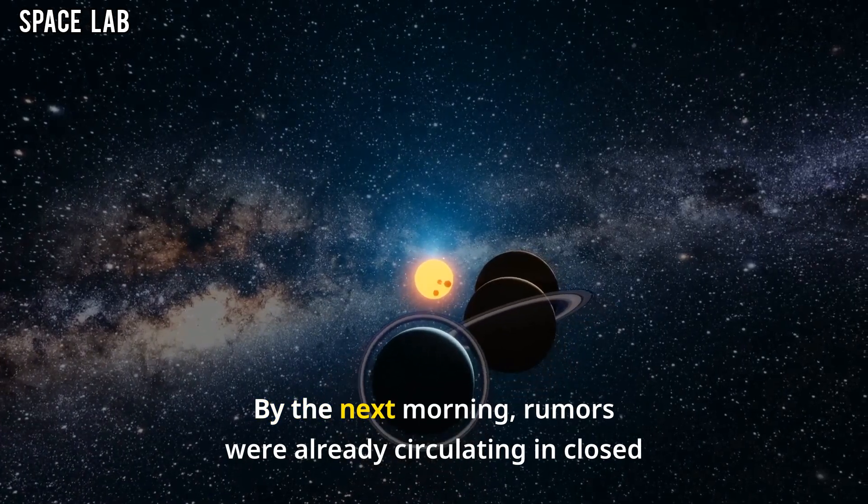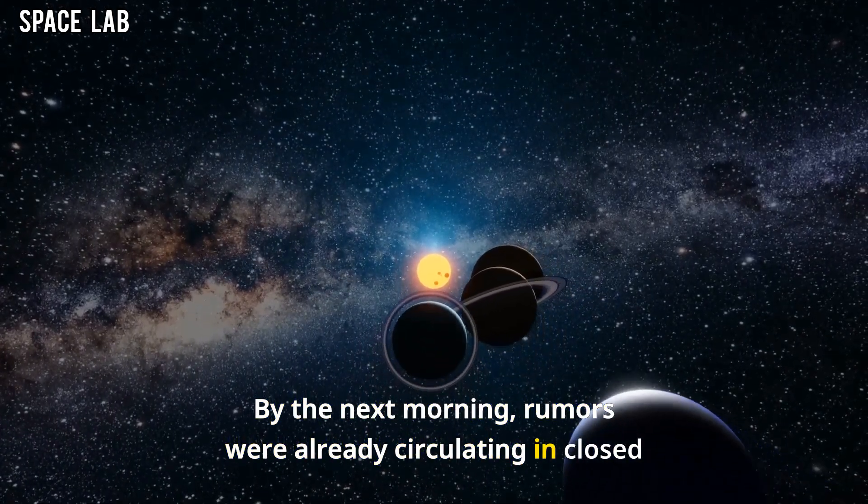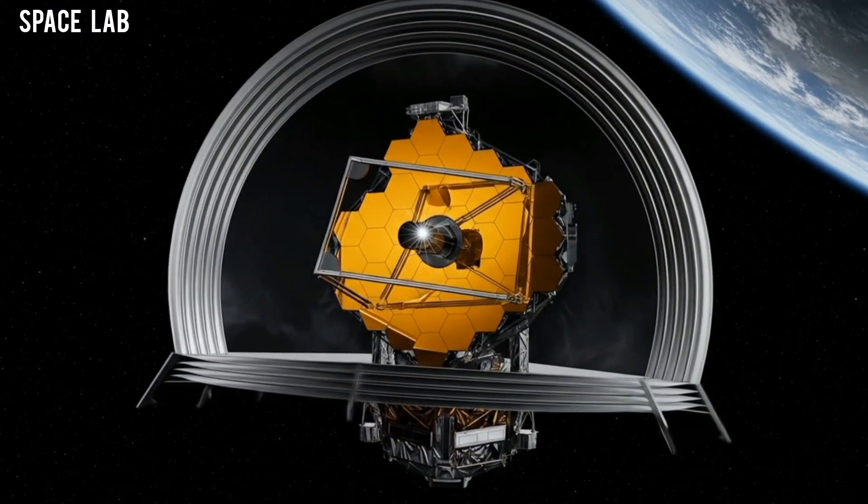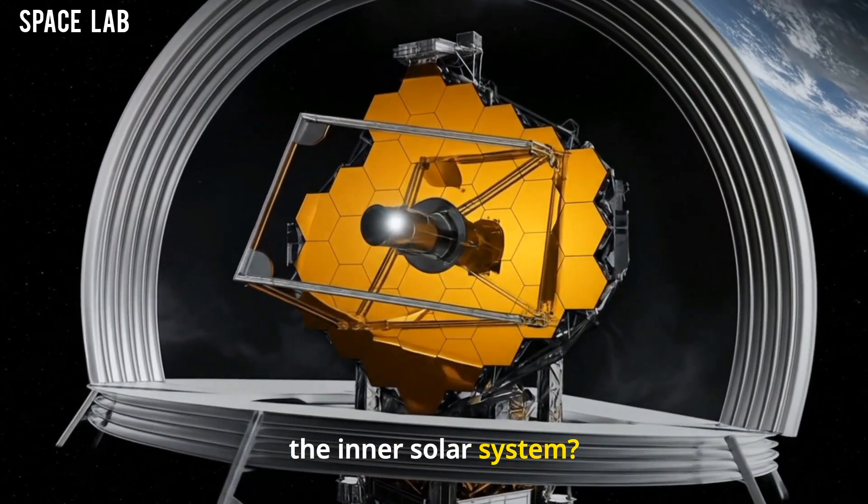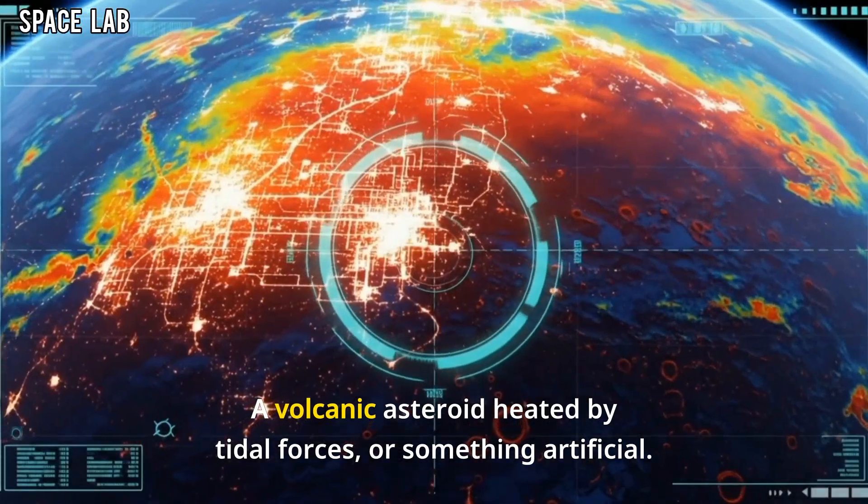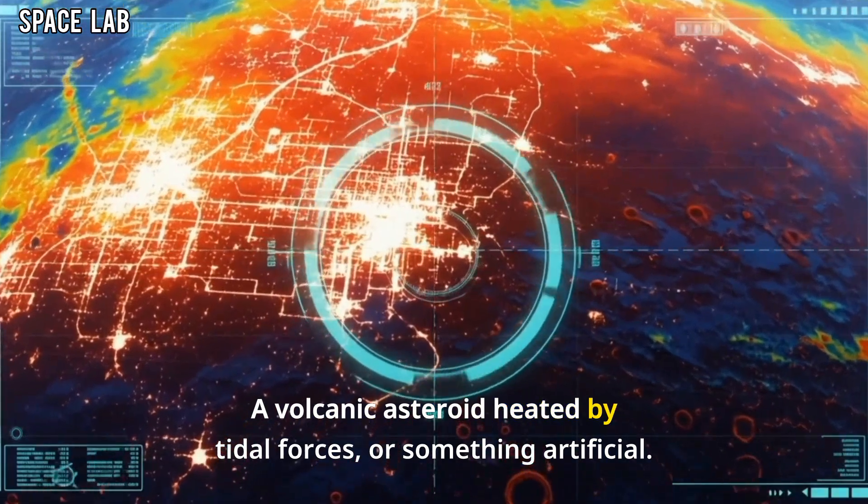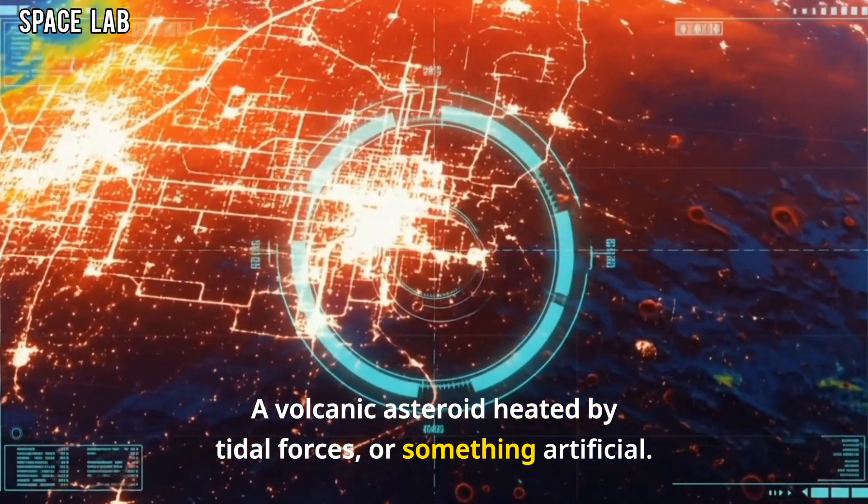By the next morning, rumors were already circulating in closed scientific circles. Was it a rogue comet fragment passing unusually close to the inner solar system? A volcanic asteroid heated by tidal forces? Or something artificial?